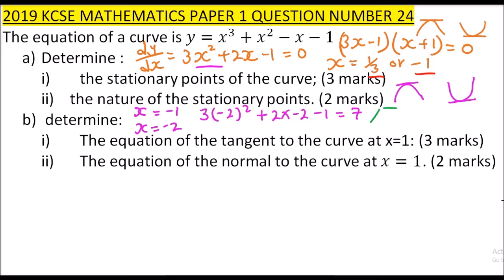At the turning point itself the gradient is 0. The point to the right of minus 1 is 0, so we check x = 0: 3(0)² + 2(0) - 1 = -1. The gradient is negative. Since the gradient goes from positive to negative, the nature of the point at x = -1 is a maximum.